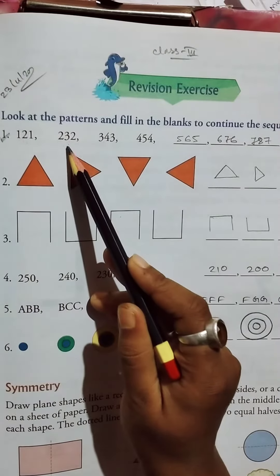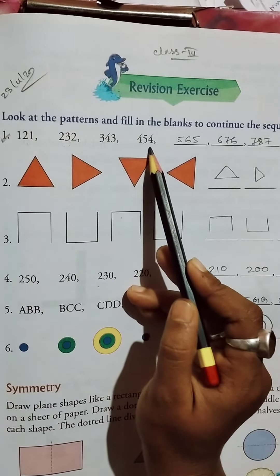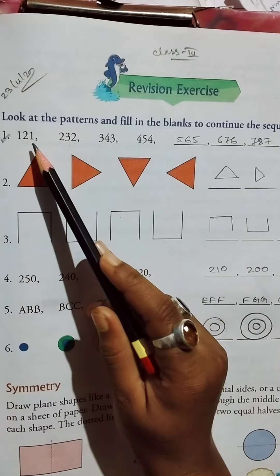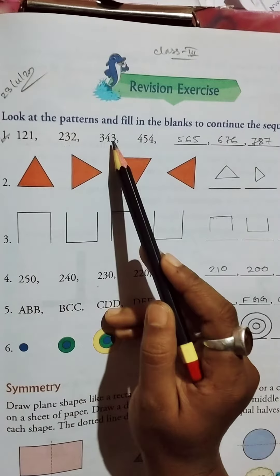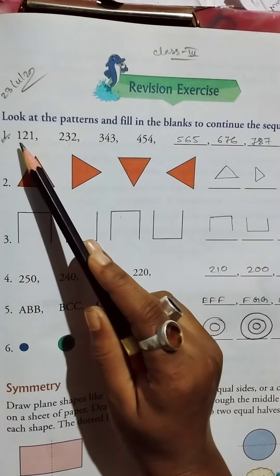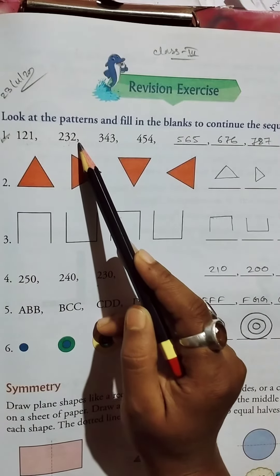121, 232, 343, and 454. So here we add 11 to continue the sequence. Firstly, 121 plus 11 equals 232, plus 11 equals 343, plus 11 equals 454.